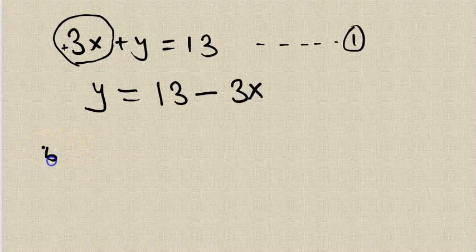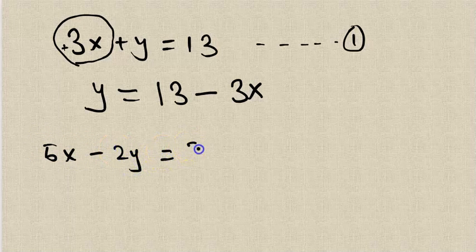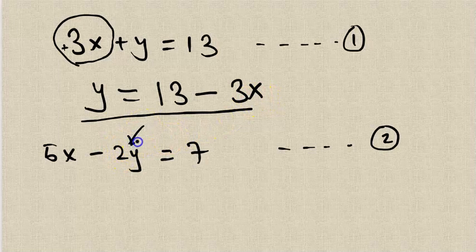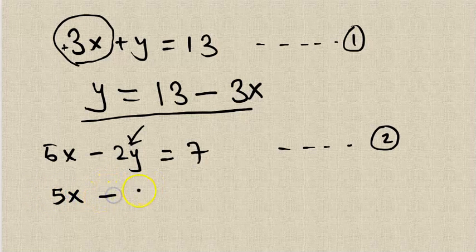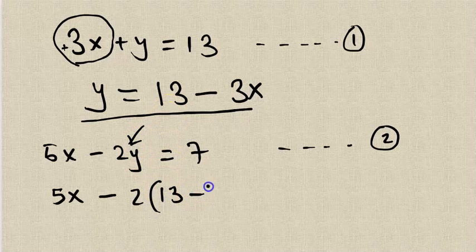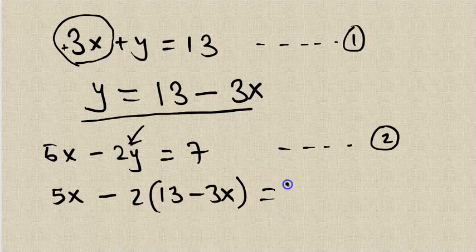The second equation is 5x minus 2y equals 7. This is our second equation. So because we have y equals 13 minus 3x, we substitute that into the place where we have y. For every instance of y, 5x minus 2 times, instead of y, we put 13 minus 3x. Let me repeat one more time. This is equal to 7.